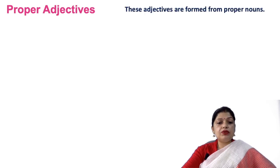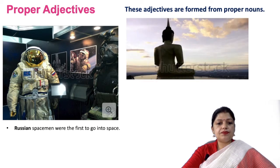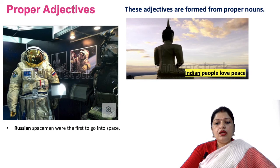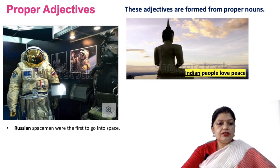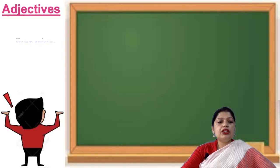Proper adjectives are formed from proper nouns. For example: 'Russian spacemen were the first to go into space' and 'Indian people love peace.' In the first sentence, 'Russian' came from the proper noun 'Russia,' and in the second sentence, 'Indian' came from the proper noun 'India.' So these two are proper adjectives.